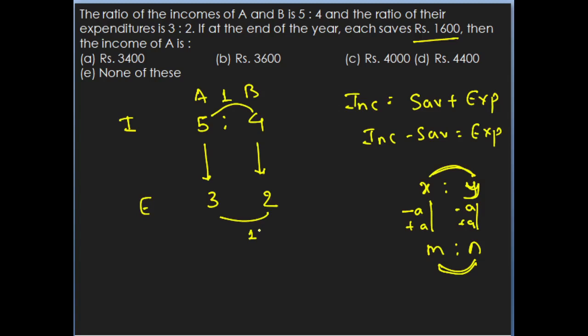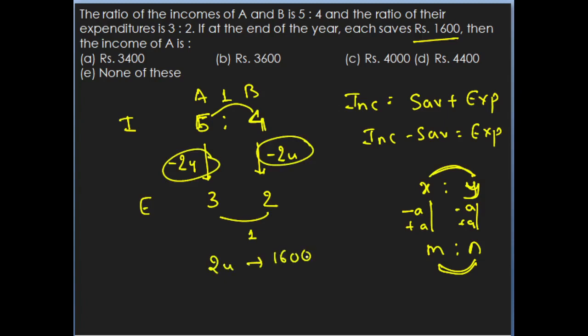Looking in terms of units: A's income was 5 units and expenditure is 3 units — decreased by 2 units. B's income was 4 units and expenditure is 2 units — also decreased by 2 units. This 2-unit decrease equals Rs. 1600 (their respective savings), because income minus savings equals expenditure. Therefore 2 units equals 1600, so 1 unit equals 800. Hence A's income is 5 units equals 800 into 5 equals Rs. 4000.